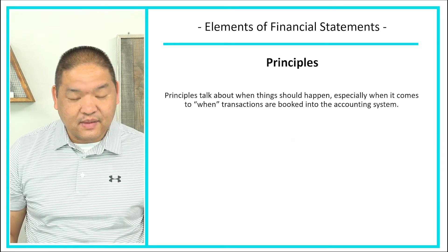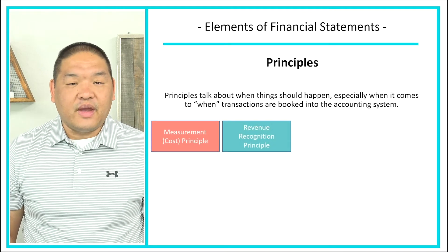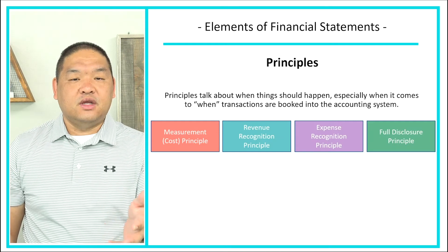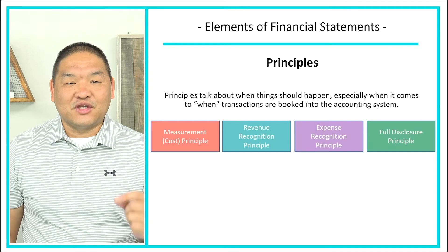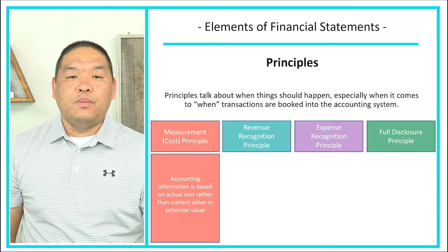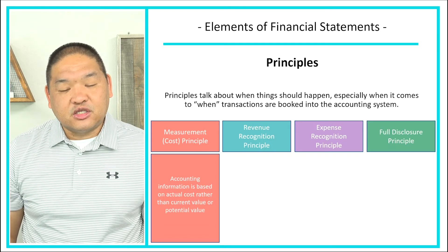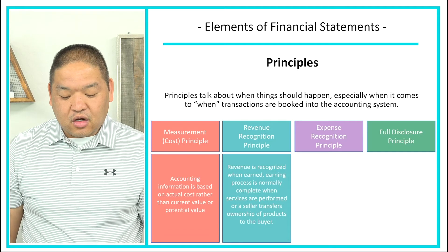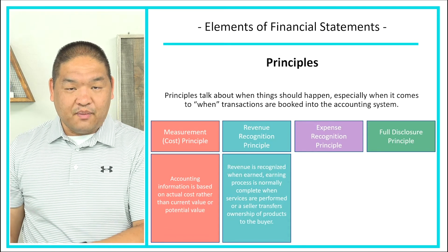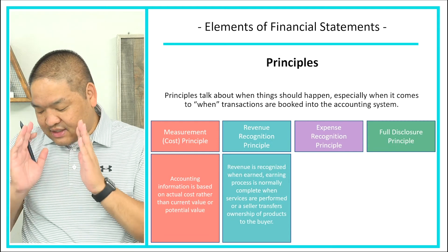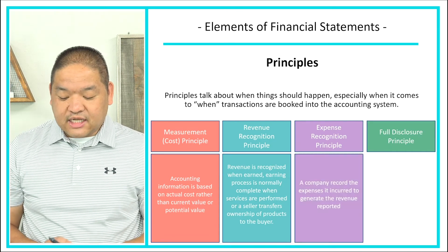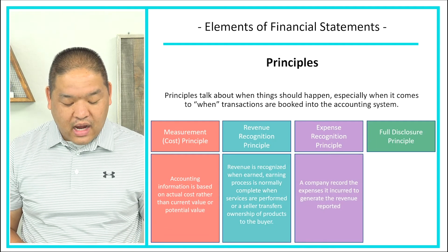Now let's talk about principles, which address when things should happen — especially when transactions are booked into the accounting system. The cost principle tells us that accounting information is based on actual cost rather than current or potential value, so when we buy an asset we book it at cost. The revenue recognition principle tells us that revenue is recognized when it's earned — normally when services are performed or a seller transfers ownership of a product to the buyer. If we earned it, we book it.